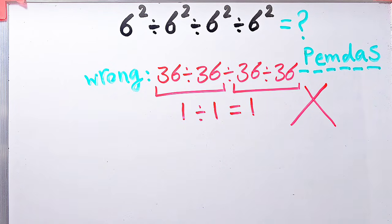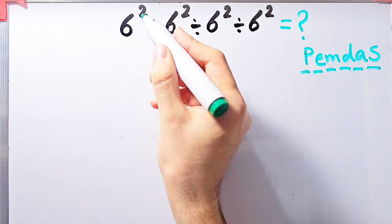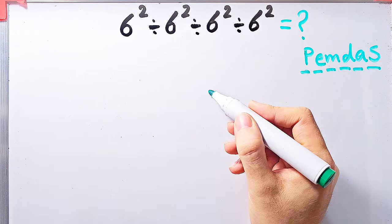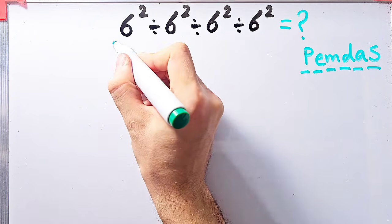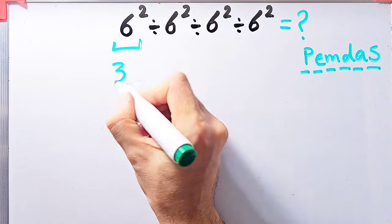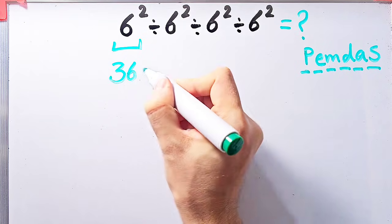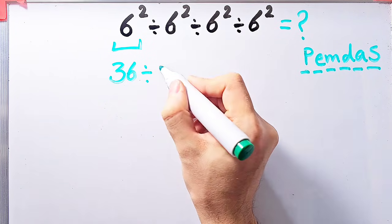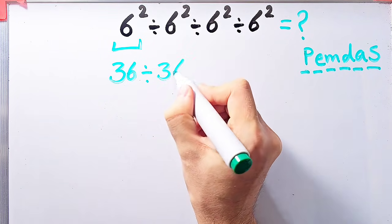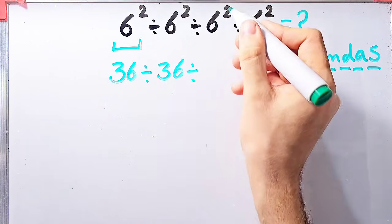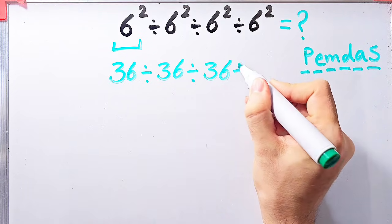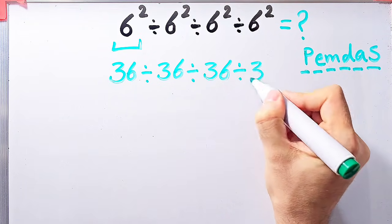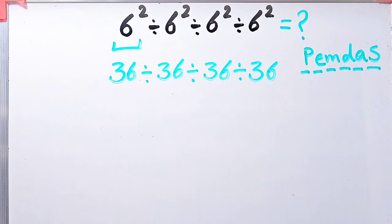Let's solve this question step by step. We have exponent and division. First we simplify all the exponents: 6 to the power of 2 equals 36. So we have 36 divided by 36, divided by 36, and after that divided by 36. Because we have three divisions, we start from the left and simplify.